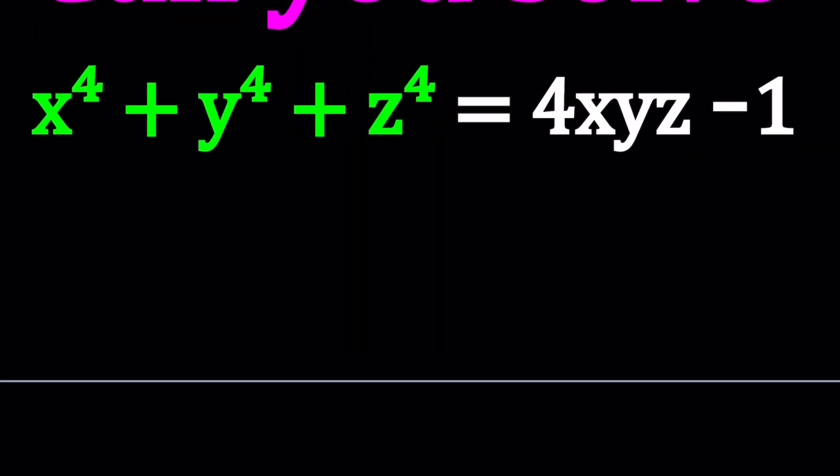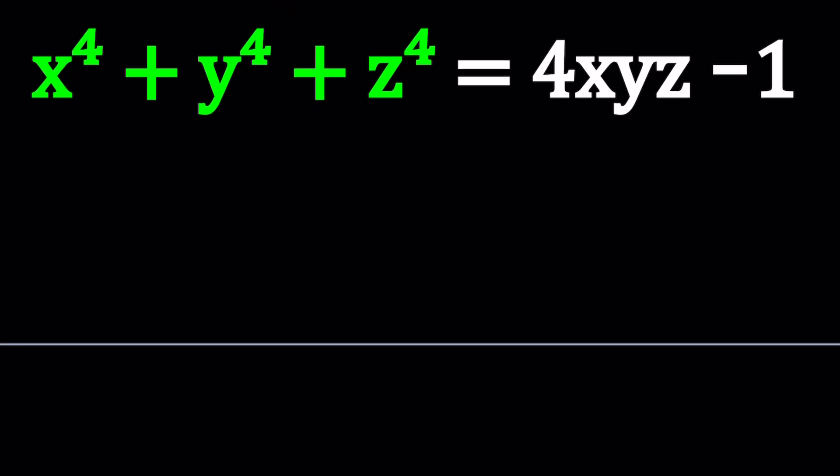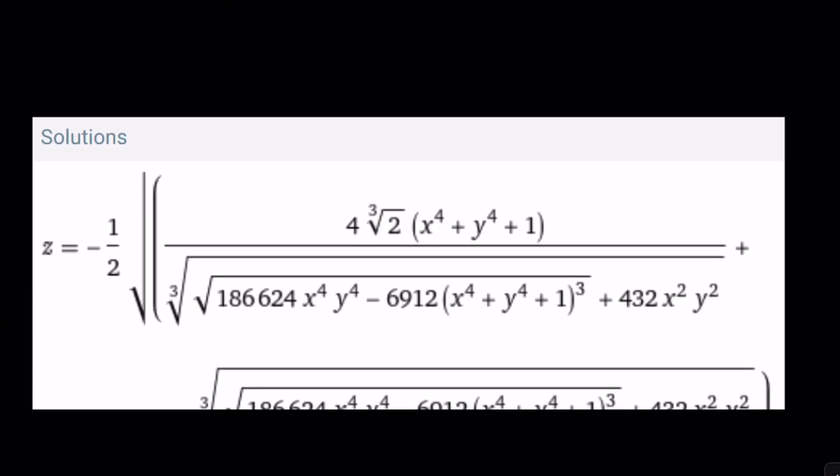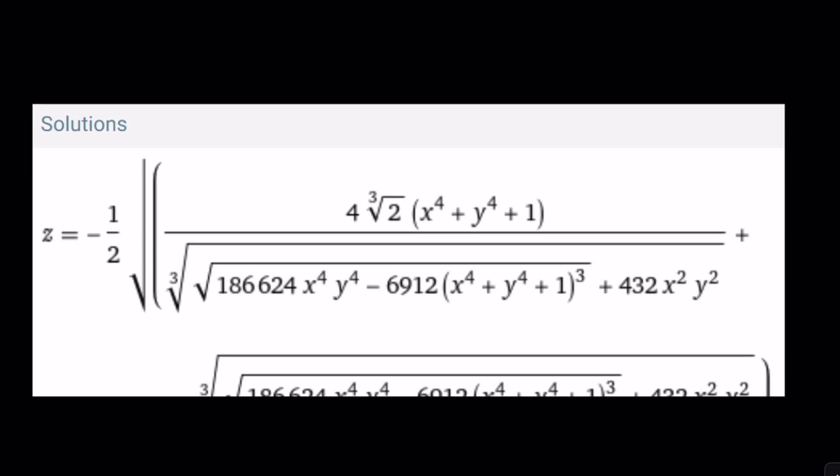So let's go ahead and put everything on the same side first. So we have x to the fourth. Before we do that, actually, I kind of put this into WolframAlpha and got a solution that kind of looks like this. It continues, but that's a really long solution.